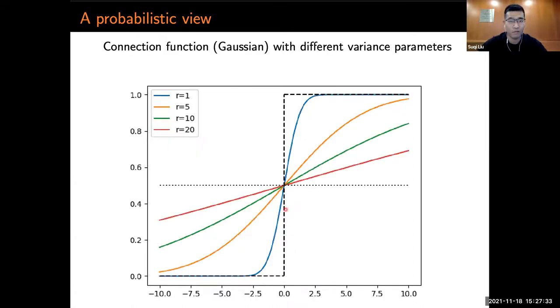Here we have a plot of the connection function with different variance parameters. We see that when R is small, the CDF is close to the threshold function, which corresponds to G(n,p,d). On the other hand, if R is large, the CDF is flat and is close to a constant, which corresponds to the Erdős-Rényi graph.